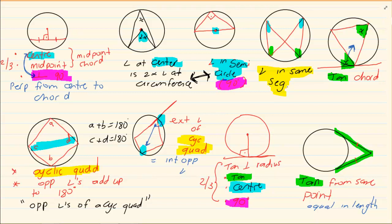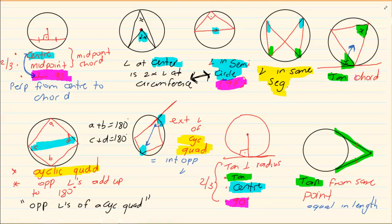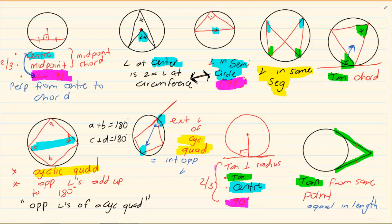The correct names are: tangent perpendicular to radius, tangents from the same point, opposite angles of a cyclic quad, exterior angle of a cyclic quad, perpendicular from center to chord or midpoint chord, angles in the same segment, and tan-chord theorem. Learn them correctly — don't create your own names. If I ask which theorems apply to cyclic quads, you give three. For tangents, you give three. For the center or 90 degrees, you identify three or four. If you can't rattle off all nine theorems, you don't know your geometry. Thank you for watching.